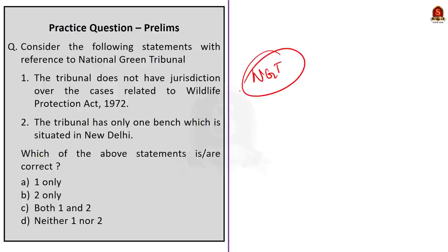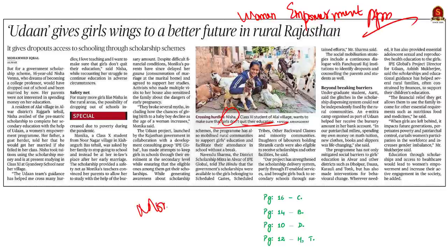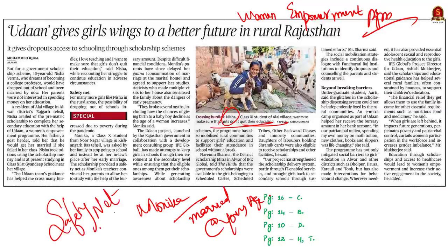Now let's move on to the next news article about the Udaan project of the Rajasthan government. It tells the story of two girls — Nisha Varma and Monika. Nisha availed a scholarship to complete her secondary education with the help of Udaan, a women's empowerment program. Her family was facing financial hurdles and this scholarship helped her overcome these struggles. In Monika's case, she got married at a very young age and her parents were pushing her to quit school and move to her in-laws' place.